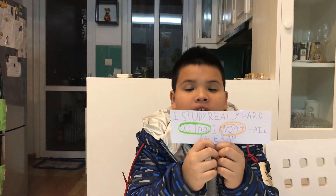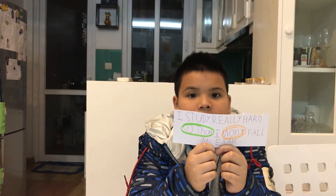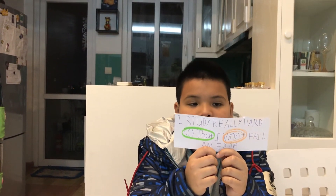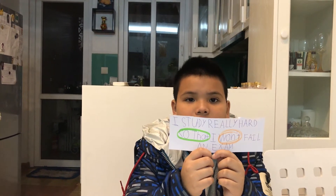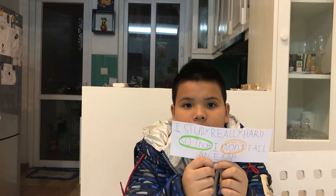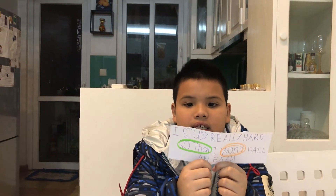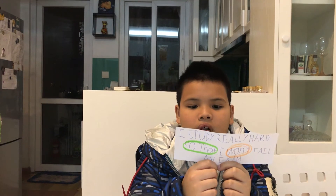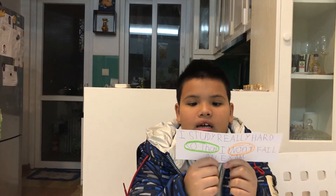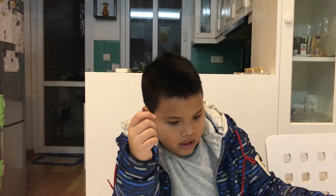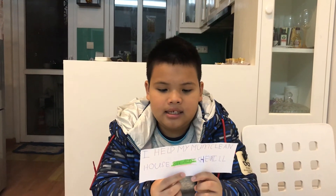I study really hard so that I won't fail an exam. The action here is 'study' and the reason is 'won't fail an exam.' The last one: I help my mom clean the house because she's busy. The action here is 'help my mom' and the reason is 'because she's busy.'